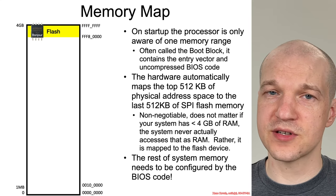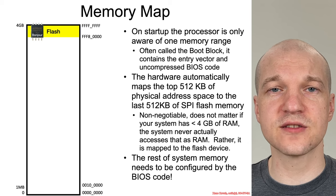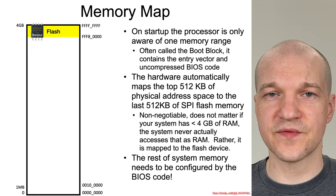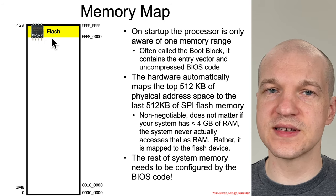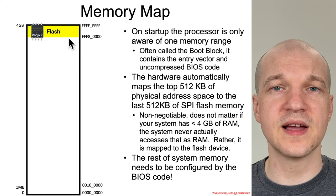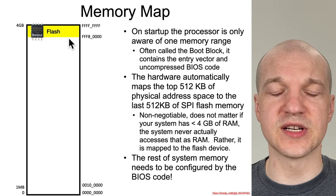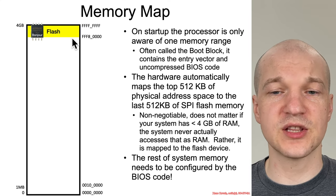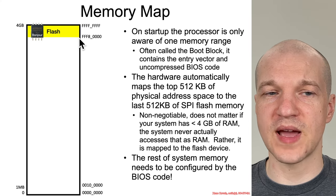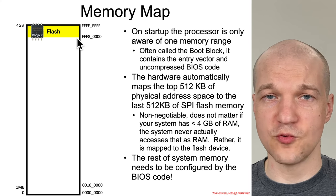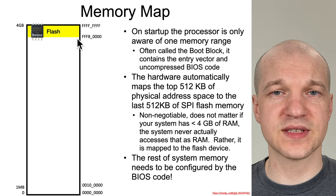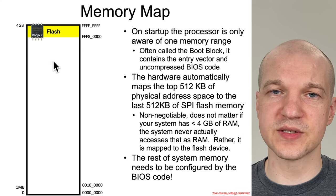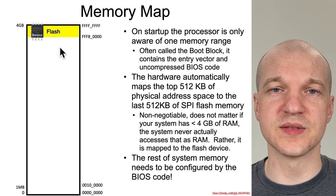The memory map is the idea that the physical address range is not exclusively mapped to physical RAM — it can be mapped to other peripherals. When the system first starts up, the only thing it actually knows about is the upper range that is always by hardware defaulted to map to the SPI flash chip on modern systems. This is sometimes called the boot block, and it's a 512 kilobyte range of memory that maps to the very end of the SPI flash chip.